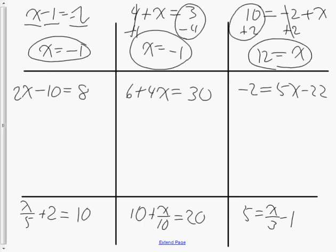From the third question onward, we have two steps. In these questions we have both a coefficient — our 2 — and a constant — our minus 10. When we have both in our equation, we have to do two steps to isolate the variable, but we do it in reverse order of operations. In regular BEDMAS, we do multiplication and division first, then addition and subtraction. But when isolating variables, we reverse that — we do addition and subtraction first, getting rid of our constant first. Since our constant is minus 10, I add 10 to both sides. Now I have 2x equals 18.